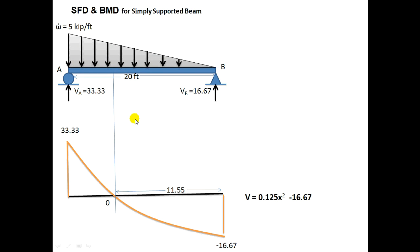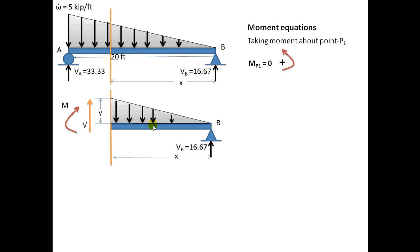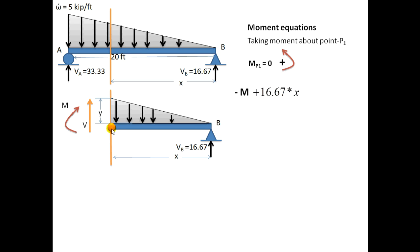Now I will make the equation for bending moment. For the bending moment, I take the moment about point P1. Counter-clockwise moments are taken as positive and clockwise as negative. M is a clockwise moment about point P — taken as negative. The reaction 16.67 acts upward with moment arm X, creating a counter-clockwise moment — taken as positive.